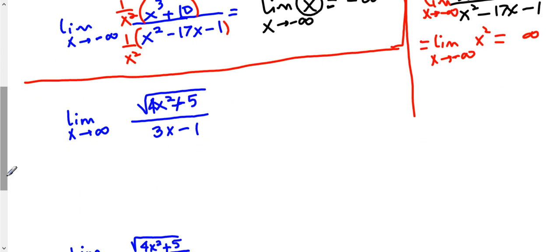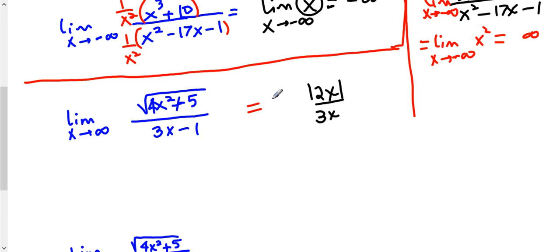This next example is a little unusual because our shortcut rules do not apply when we have radicals. But we can still use the idea of dominant terms. The dominant term in the numerator is the square root of 4x squared. If you simplify that, you get the absolute value of 2x. Usually we just write 2x and don't give it a second thought because we assume x is positive. The dominant term in the denominator is 3x. If x is approaching positive infinity, x is positive, so the absolute value of 2x is just 2x, giving an answer of positive 2 thirds.